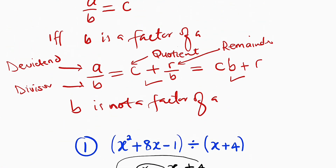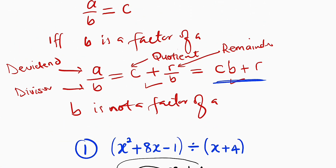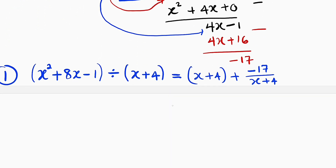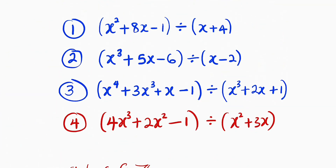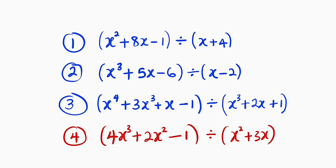You can also write it in the other form, which is cb plus r, where c is the quotient, b is the divisor, and r is the remainder. So we obtain: x plus 4 times x plus 4, then minus 17. This is the result after dividing x squared plus 8x minus 1 by x plus 4. Now let us take the next one, which is x to the power of 3 plus 5x minus 6 divided by x minus 2.